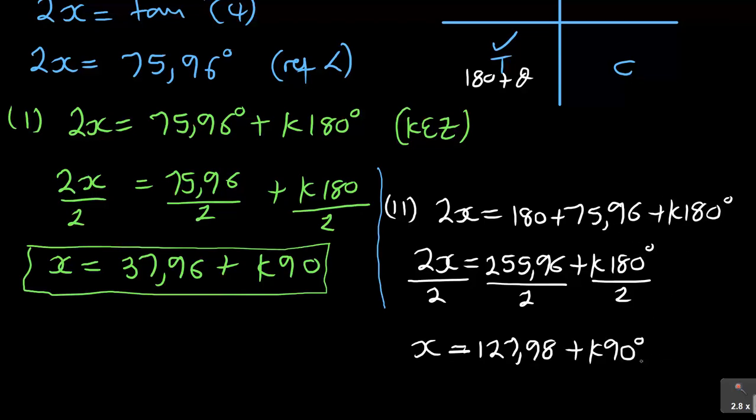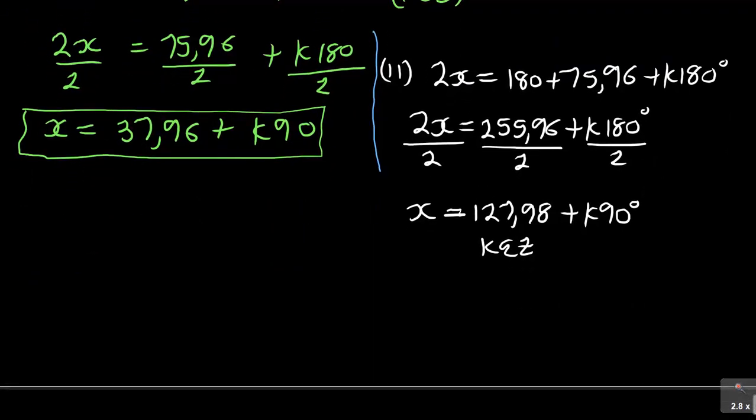Don't forget, the condition here is K is an element of set. I didn't write it in the first one, so I'm just writing it as the final answer there. So this is how then I have the two general solutions.